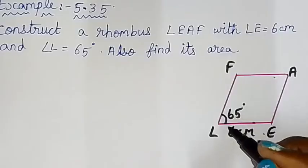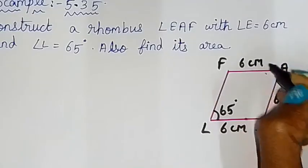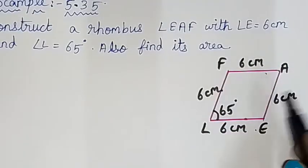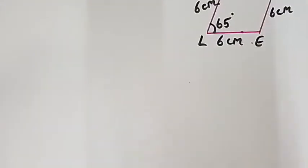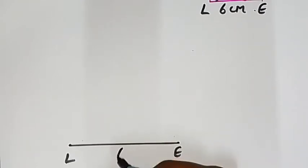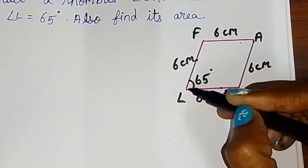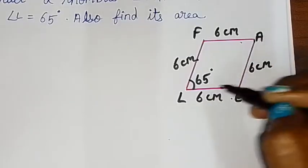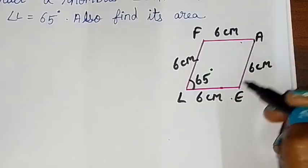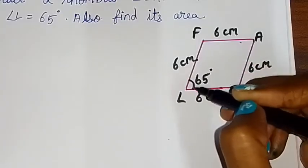All sides of this rhombus are 6 centimeters. First, draw the base line LE of 6 centimeters. Since we are not only drawing a triangle but marking an angle, we will mark the angle at L. We use a protractor to mark the angle.